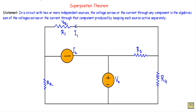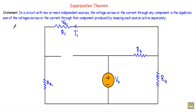After replacing the current source with an open circuit, the voltage that will be produced across R1 is Vr1 prime, and the current that will be flowing through R1 is I1 prime.